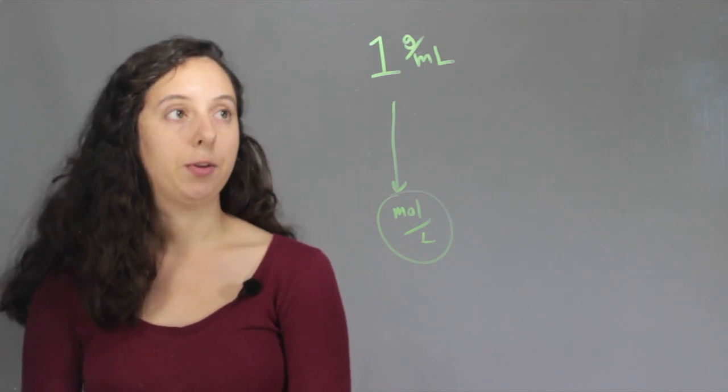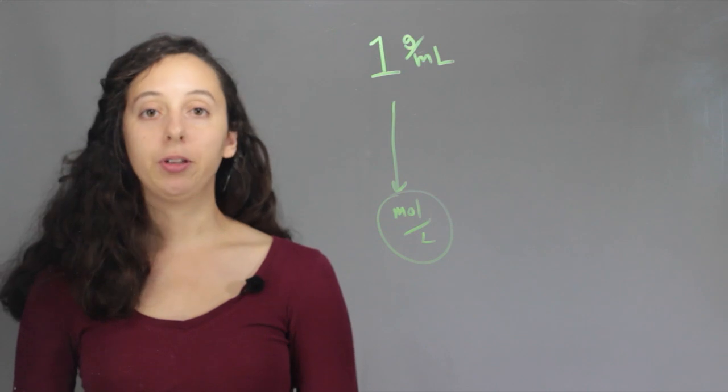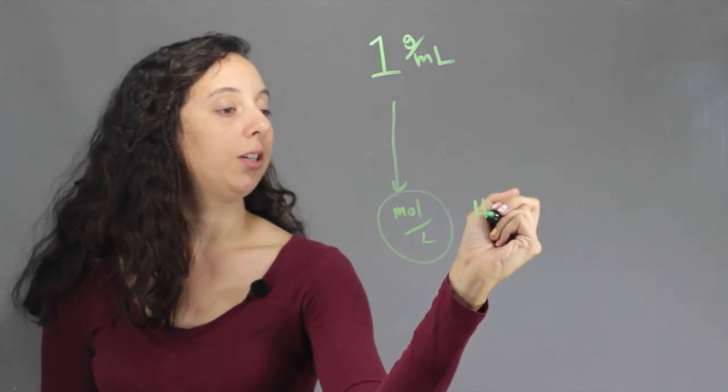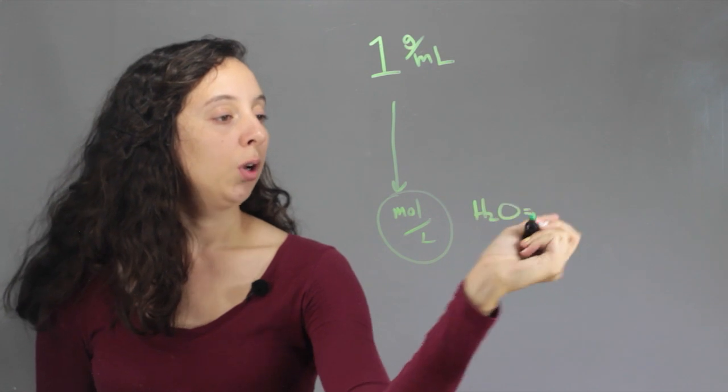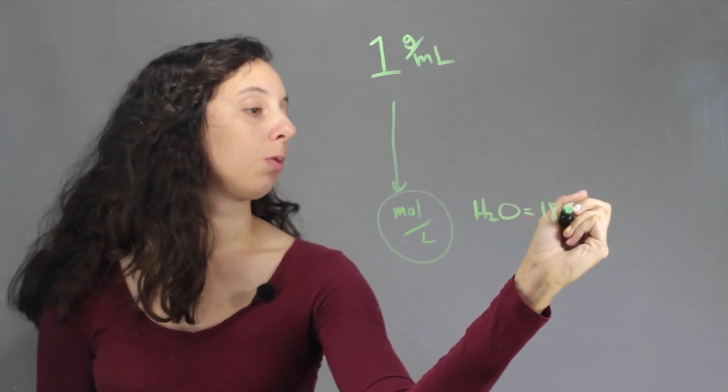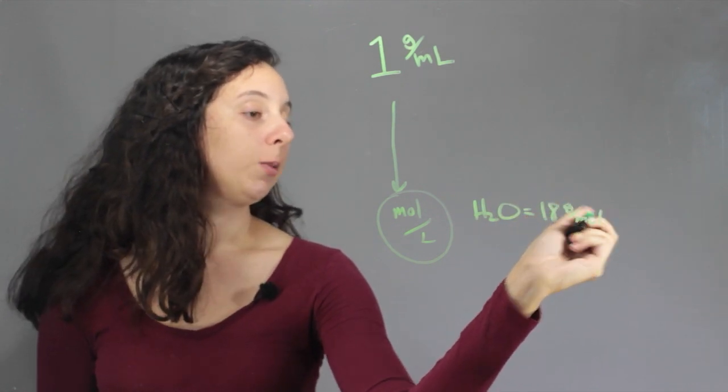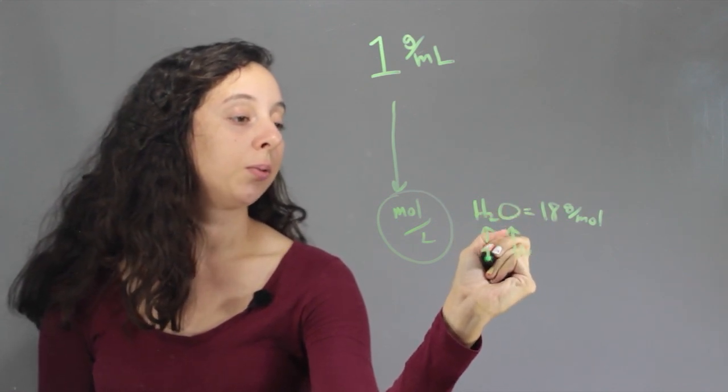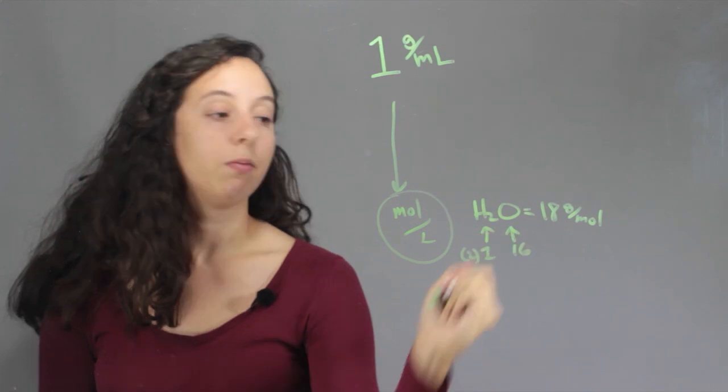So the first step is we need to convert grams to moles. We do that with our molar mass. So now water, H2O, weighs 18 grams per mole because oxygen weighs 16 AMUs and each hydrogen weighs one, but we have two of them.